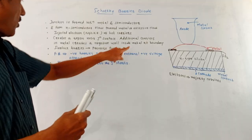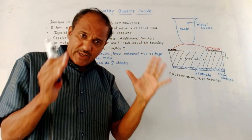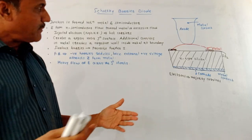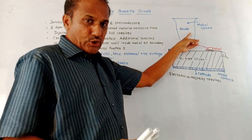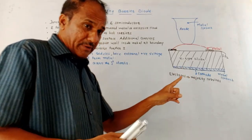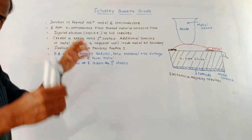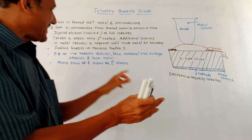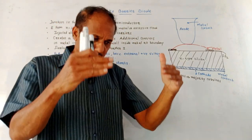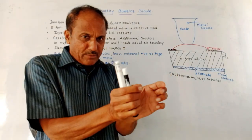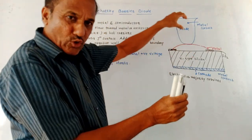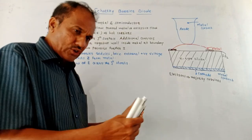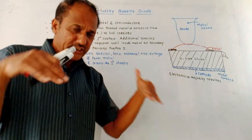This prevents further flow of current. This is the case whenever the junction is just created. When we apply forward bias, we connect positive supply to the anode terminal and negative to the cathode terminal. Whenever the junction is forward biased, this negative barrier — created because of the electrons present in the metal — gets reduced, because the positive terminal of the external supply attracts the electrons towards it. So the barrier gets reduced and heavy flow of electrons starts taking place across the junction.